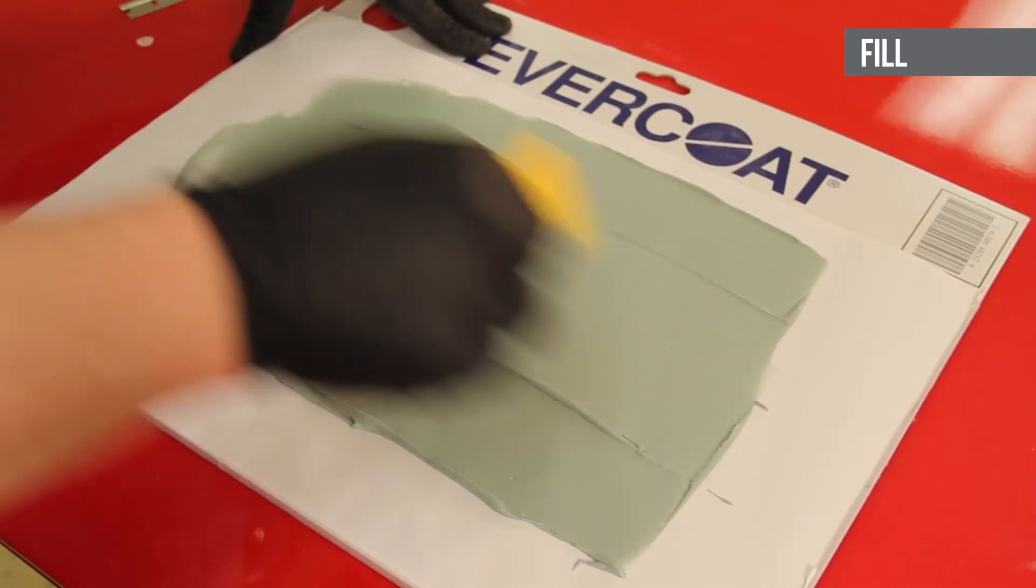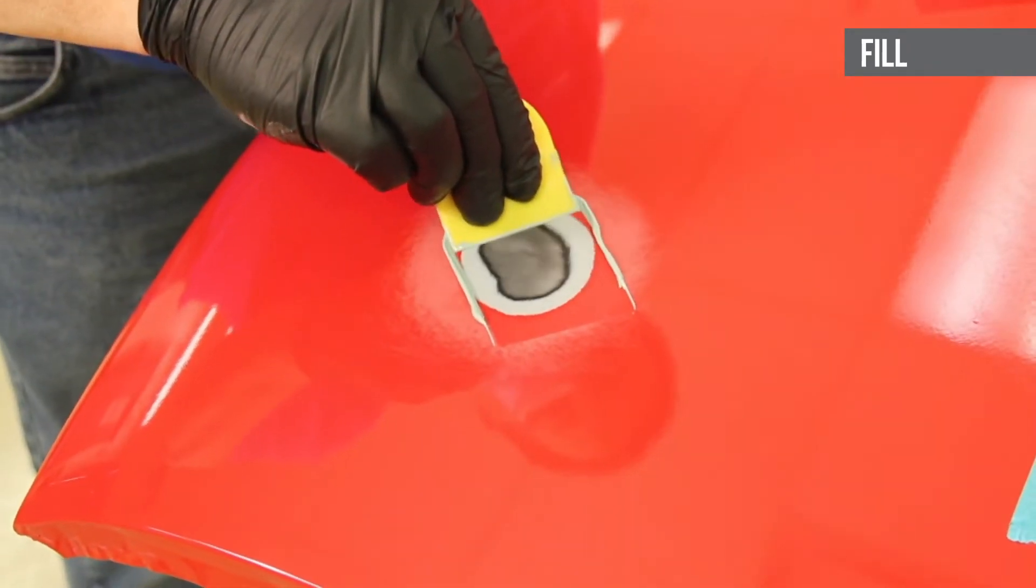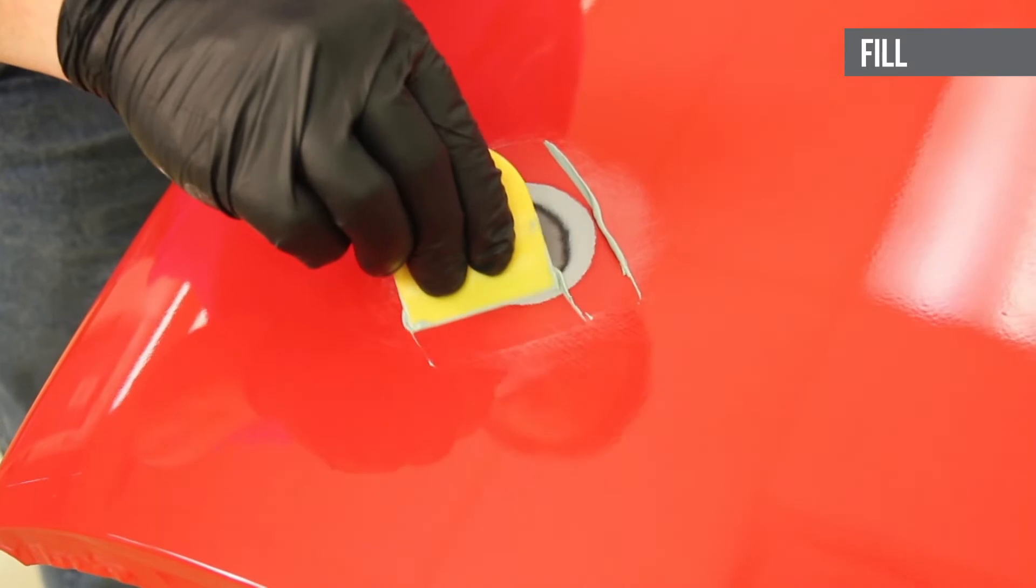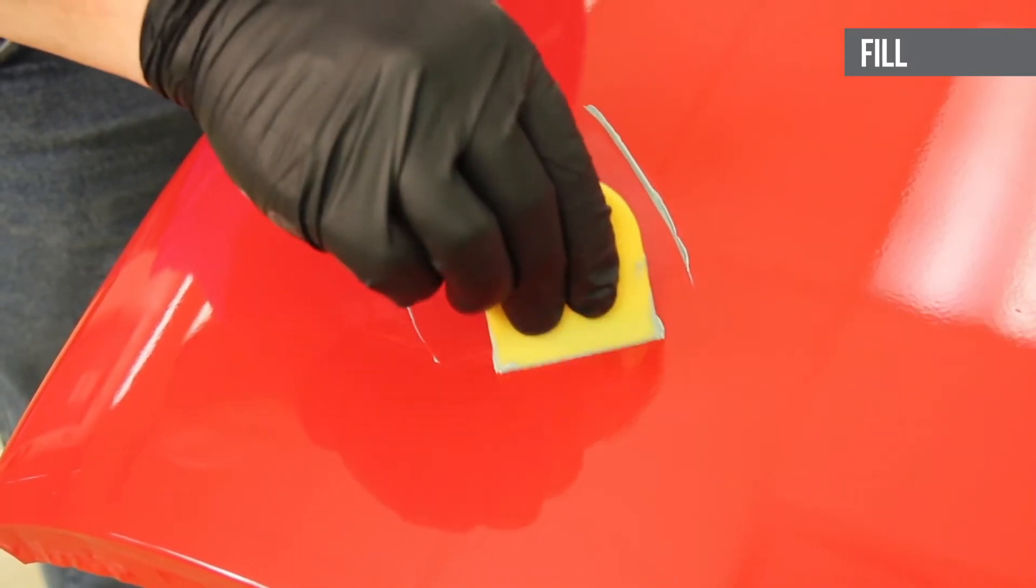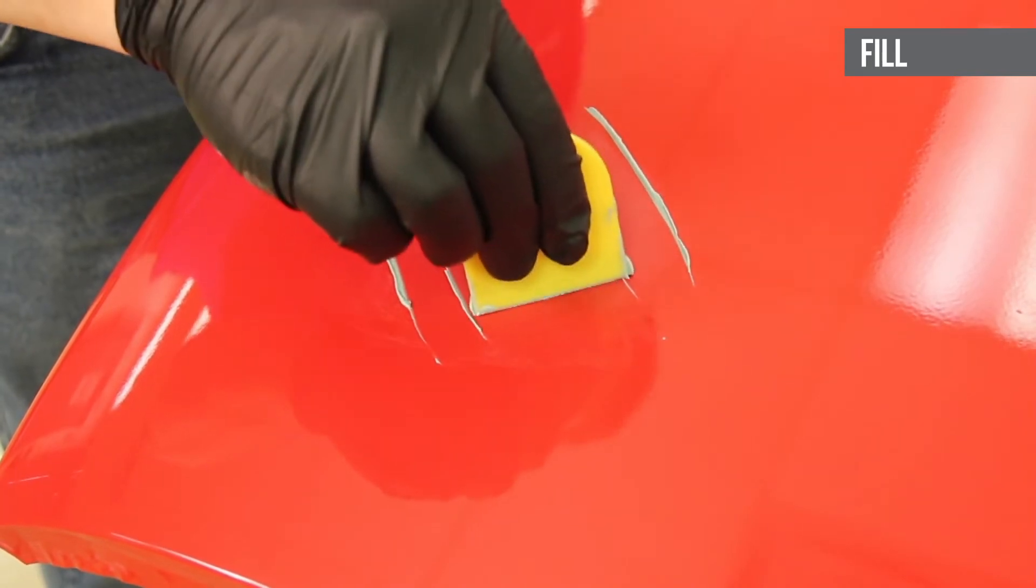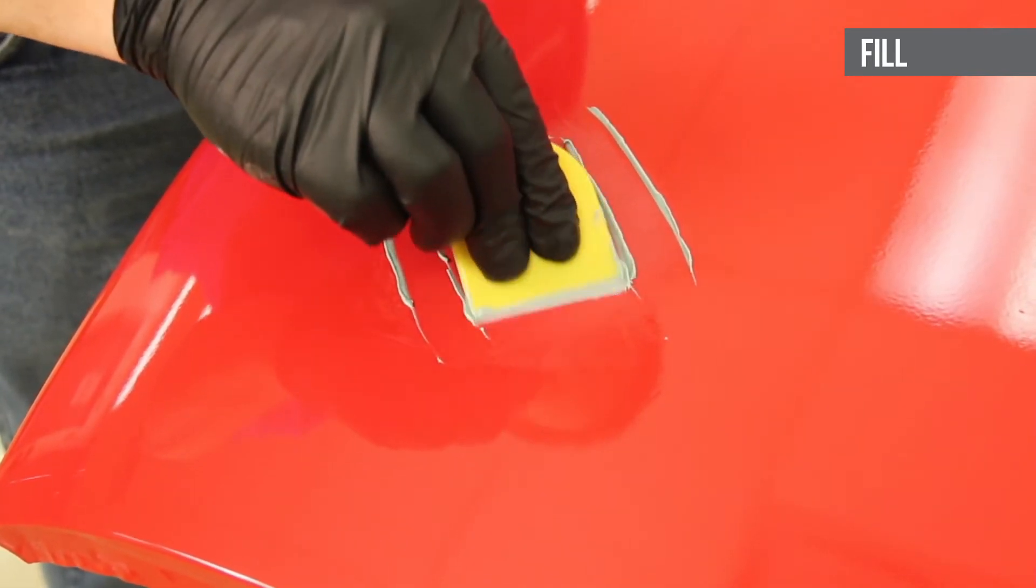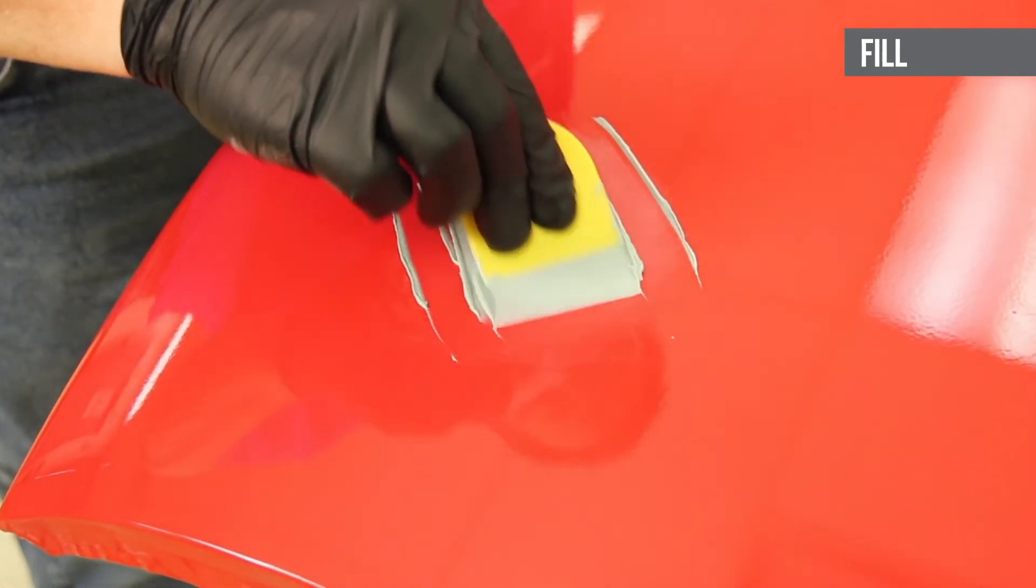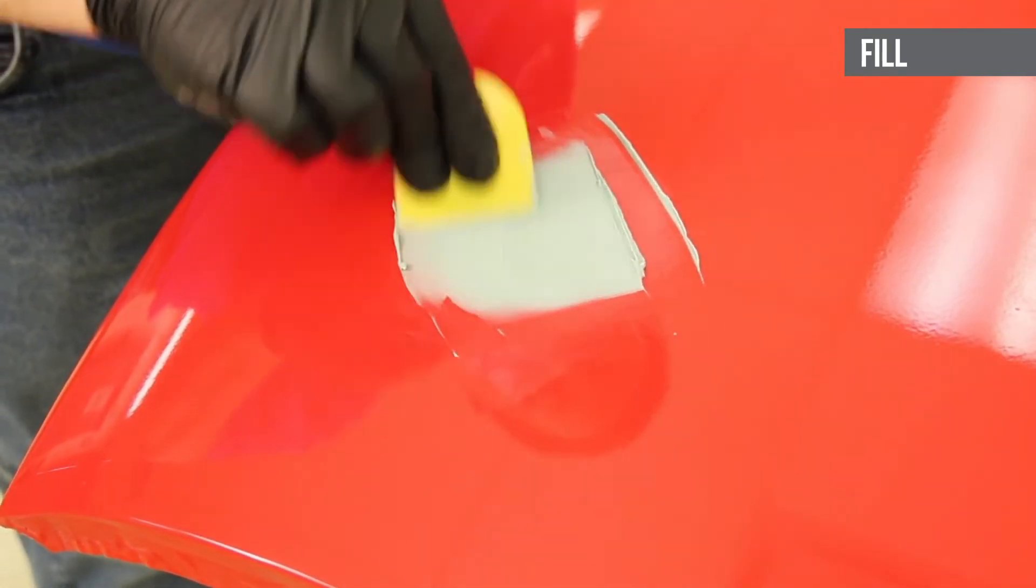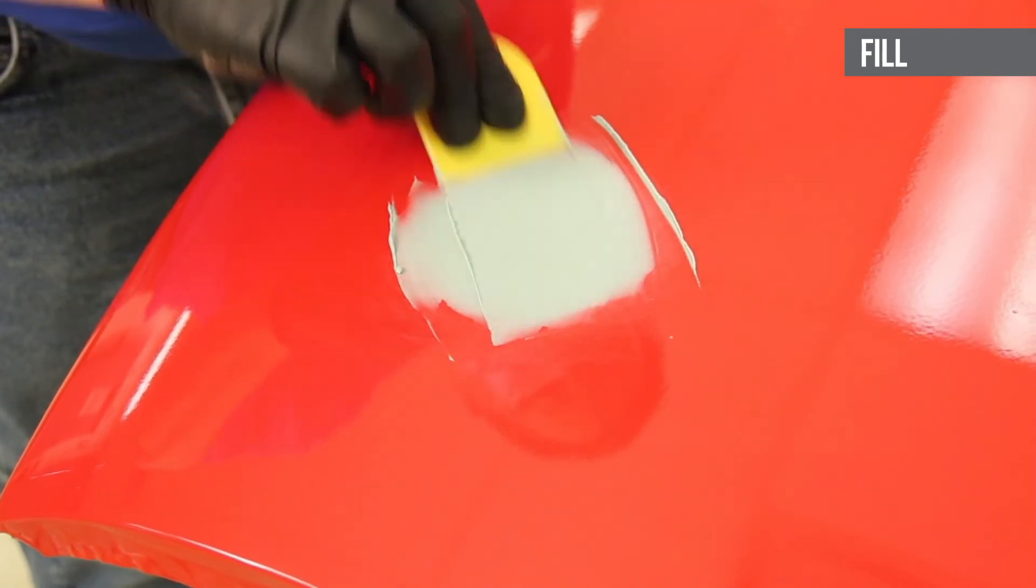To apply the body filler, wet the repair surface by spreading a thin layer of mixed material over the surface using even, firm pressure. Wetting the surface first will help make sure there is good adhesion and will help reduce pinholes. Apply additional layers of material, building the area slightly higher than the surface so that the filler can be sanded down to a smooth and even finish.